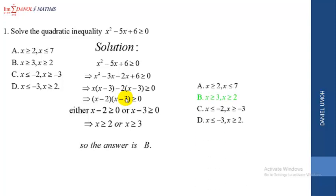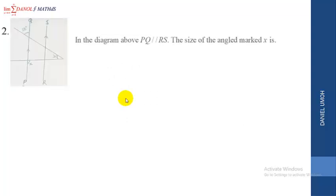We now consider Question 2. The question says: in the diagram, line BQ is parallel to line RS. What is the size of the angle marked x? The options are: A) 100 degrees, B) 80 degrees, C) 50 degrees, D) 30 degrees. We cannot guess, so we go into the solution.